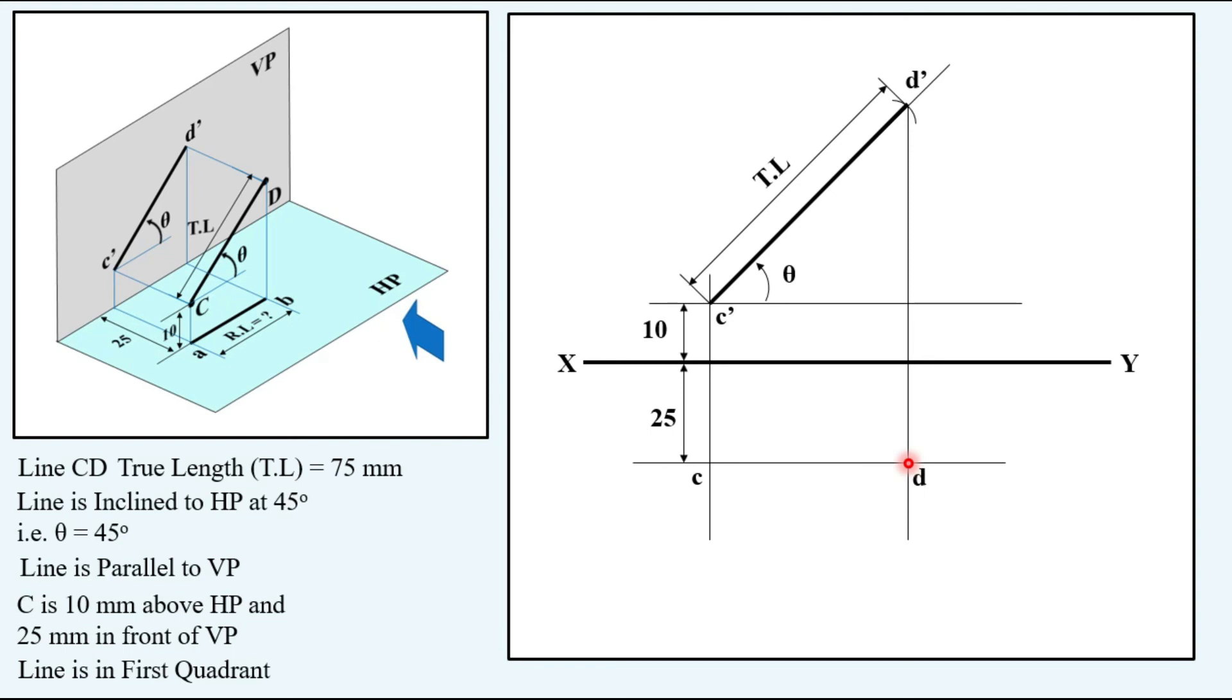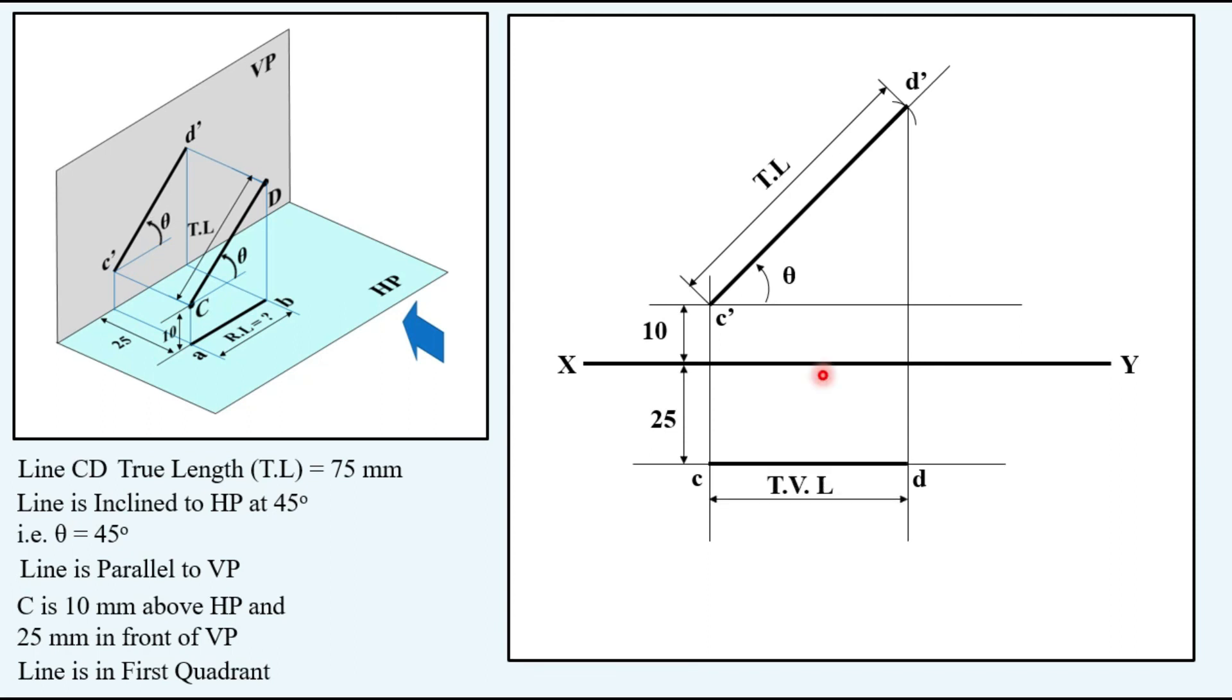So you will be having this as corresponding top view point of D. Line joining CD is the top view. So this is the required length of the top view. You can measure it directly from here and that will be the required answer.